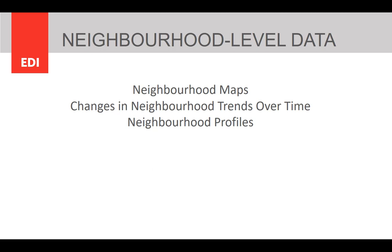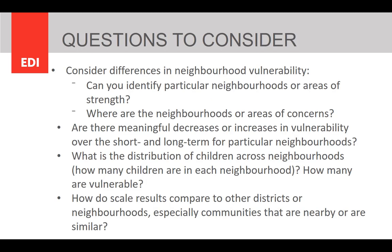The next section takes a look at the neighborhood level patterns and trends. Here we provide some questions to consider that are helpful for reflecting on the community and neighborhood level data. For example: consider the differences in neighborhood vulnerability — can you identify particular neighborhoods or areas of strength? Where are the neighborhoods or areas of concern? Are there meaningful decreases or increases in vulnerability over the short and long term for particular neighborhoods? What is the distribution of children across neighborhoods, and how many are vulnerable? How do scale-level results compare to other districts or neighborhoods, especially communities that are nearby or similar?